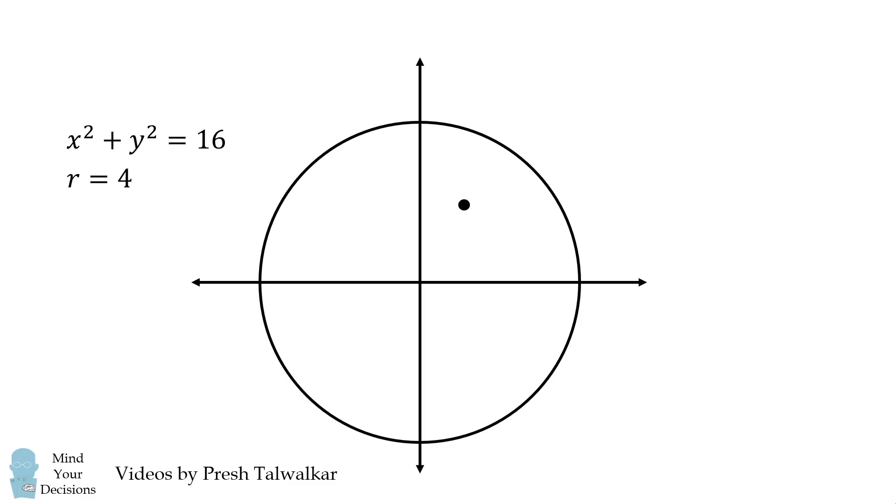We have the point M at (1,2), which is the midpoint of the chord. We draw tangents at A and B to meet at a point C. We then connect OA and OB, which each have a length of 4. We want to calculate the area of this kite.